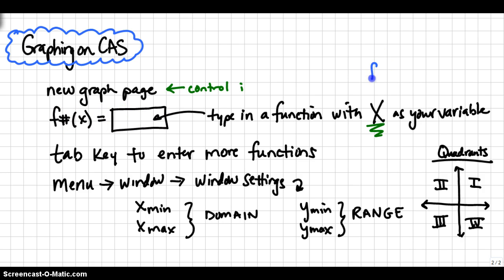Regardless of what the variable is that you're working with, the calculator always graphs for X. So if you're working with a function that says F of T, for example, and you want to graph T squared, you would always type it in as X squared instead. The calculator will not recognize any other variable other than X.